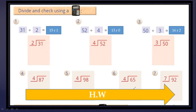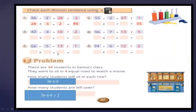Questions 4 to 7 are your homework. Now, problem: there are 34 students in some classes. They want to sit in 4 equal rows to watch a movie. How many students will sit in each row? Note that 34 divided by 4 equals 8. How many students are left over?